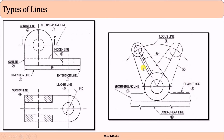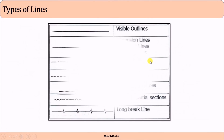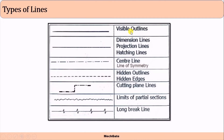So these are the various important types of lines. We should also understand their relative darkness: visible lines should be drawn a little bit darker, while thin lines such as dimension lines, projection lines, and hatching lines should be drawn a little bit lighter.